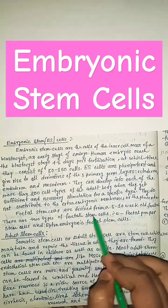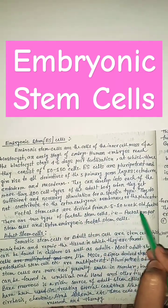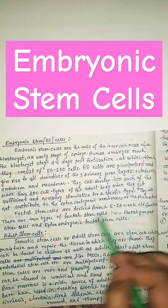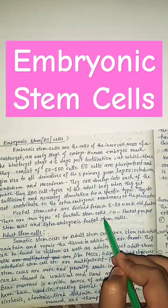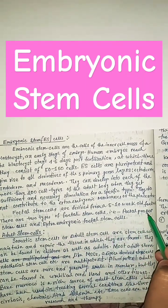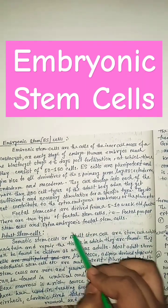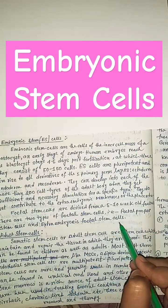Fetal stem cells are derived from a 5 to 10 week old fetus. There are two types of fetal stem cells: fetal proper stem cells and extra embryonic fetal stem cells.